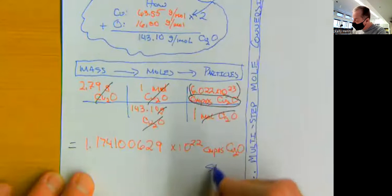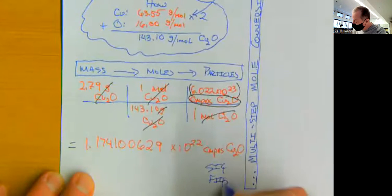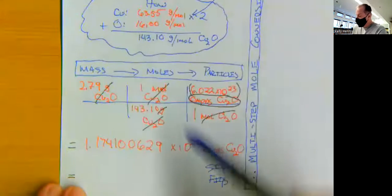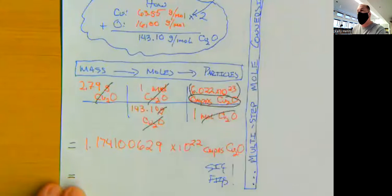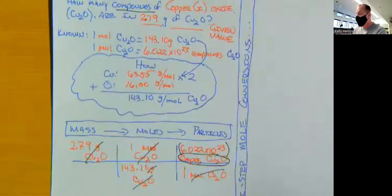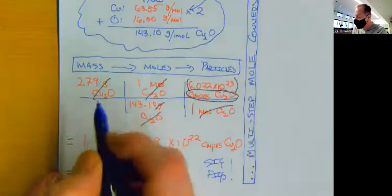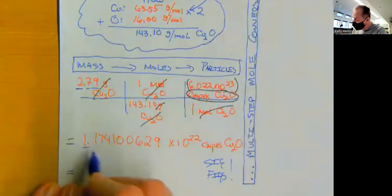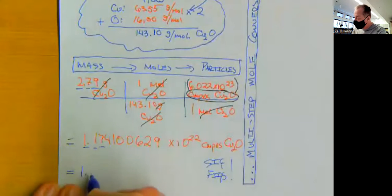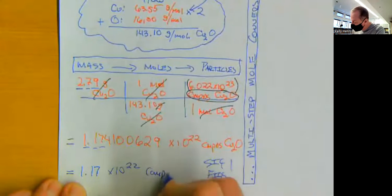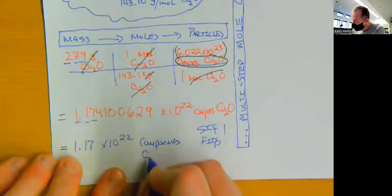But we have sig figs. So we can't forget about those. Molar mass and Avogadro's numbers are constants, so we don't need to worry about those. We need to look at back to our given information, our given value to determine the number of sig figs. And here, it's 2.79 where we have three sig figs. So if we go three sig figs, four we won't round up, that gives us 1.17 times 10 to the 22nd compounds of copper oxide.